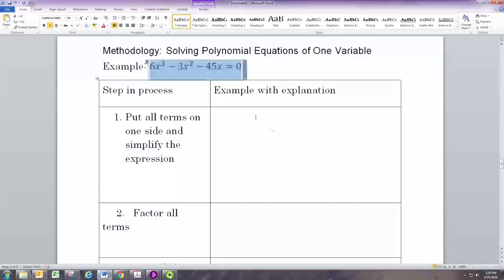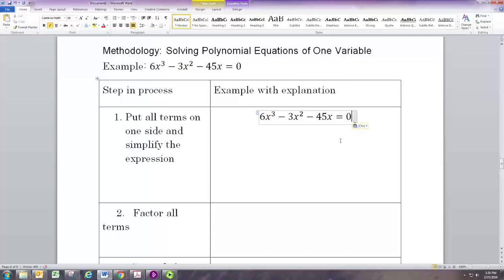Now we'll show how factoring can be used to solve that equation. The first step is to get everything on one side and zero on the other side. You can see that's already done for this problem, but in general you want to get everything on one side, zero on the other, so we can use that zero factor property. Also make sure that the side is distributed and combined like terms, so refer to the simplifying expressions methodology for that.